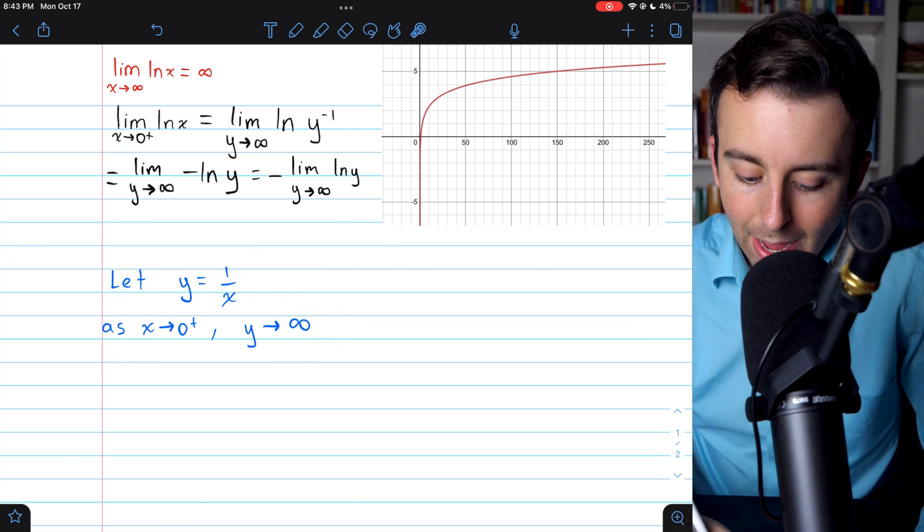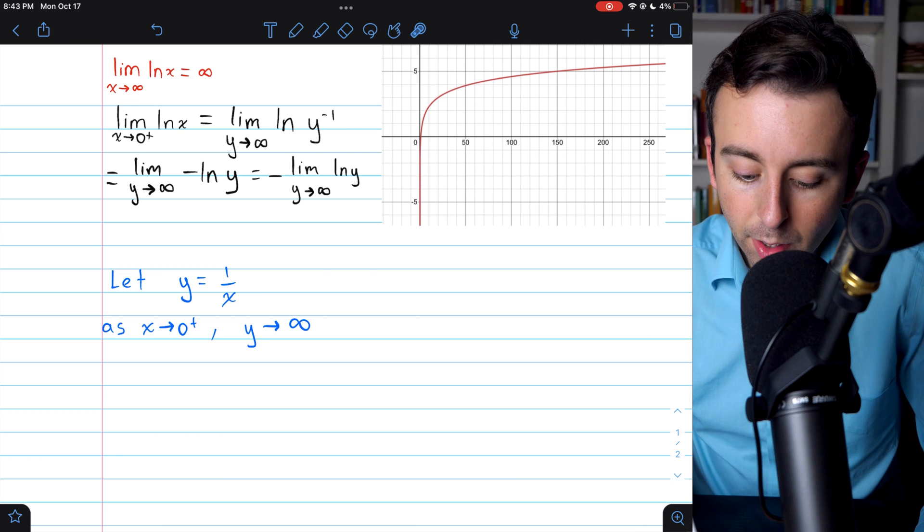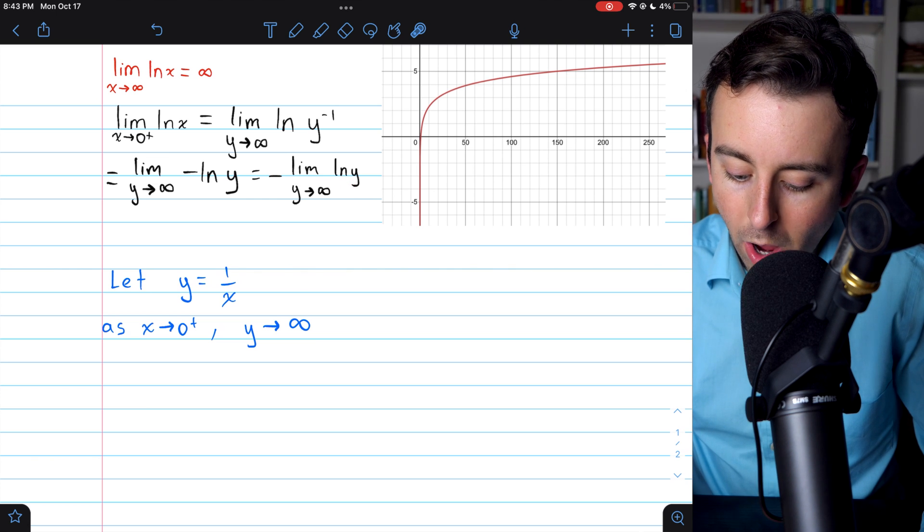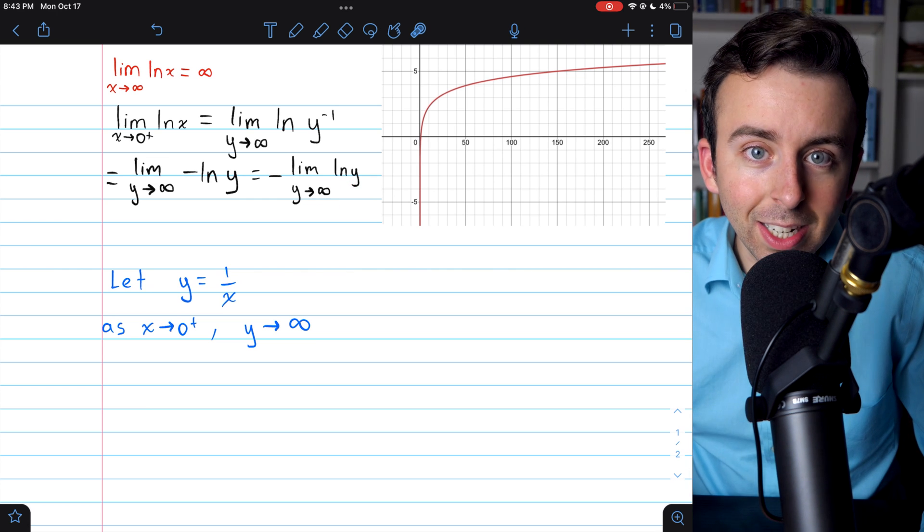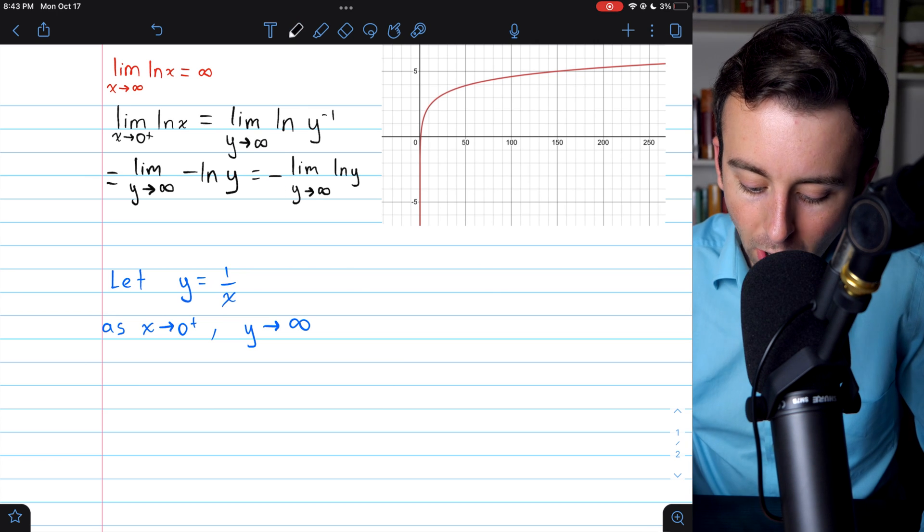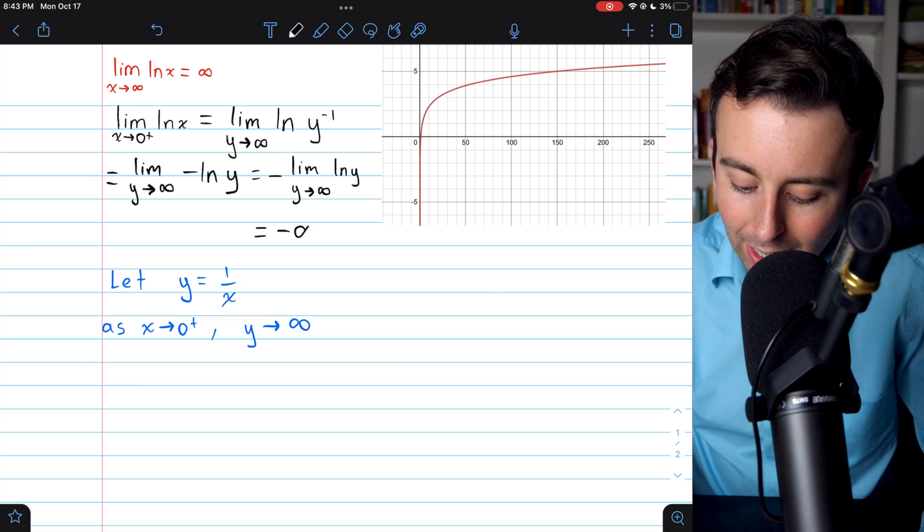We know that natural log of x with x approaching infinity goes to infinity. So similarly, natural log of y as y goes to infinity is infinity. But then we have a negative out front. And so our final answer is negative infinity.